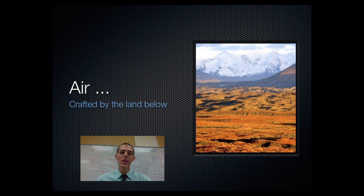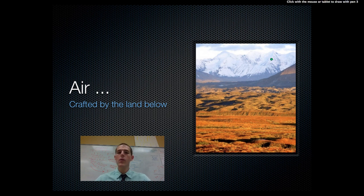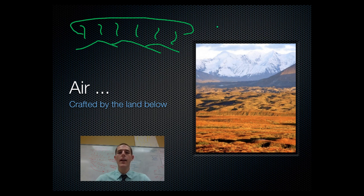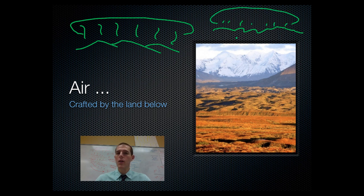This is important because air is crafted by the land that is below it. Air sits on top of land, and what's going on with that land determines what's going on with the air above it. For example, a desert is hot and dry, and it radiates heat up towards the air above it — so any air sitting on top of that desert is going to be really warm and really dry. On the other end, if you're at the North Pole with snow, it radiates cold upward, and any air above that tundra or Arctic region is going to get really cold.